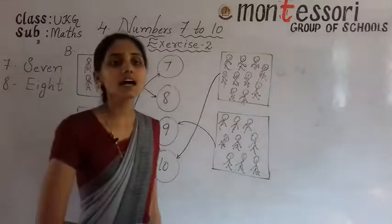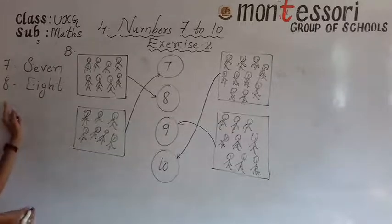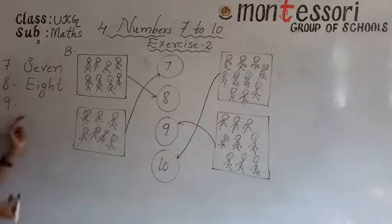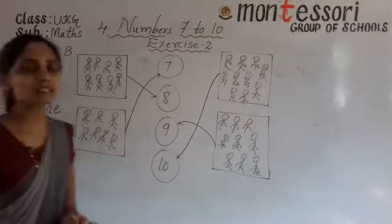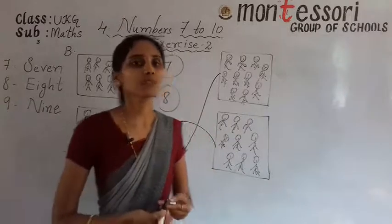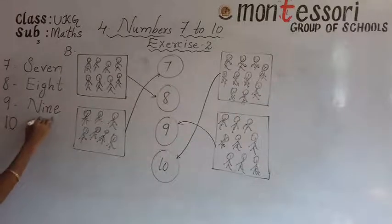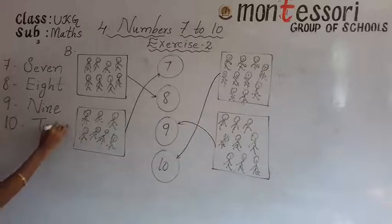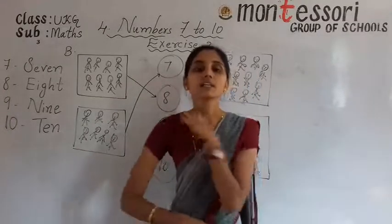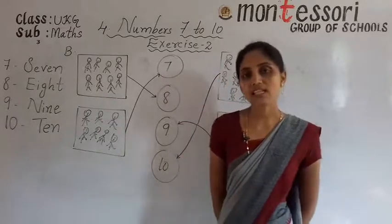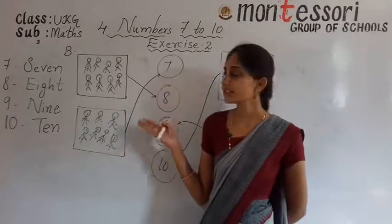What is the spelling of 8? E, I, G, H, T — eight. After 8, what is the number? 9. What is the spelling of 9? N, I, N, E — nine. After 9, what is the number? 10. What is the spelling of 10? T, E, N — ten. In the previous class we learnt spellings up to 1 to 6. Now in this class we are going to learn spellings of numbers 7 to 10.